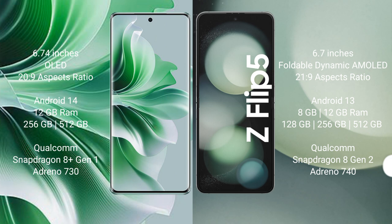Oppo Reno 11 Pro runs on the Android 14 operating system. Samsung Galaxy Z Flip 5 runs on the Android 13 operating system. Oppo Reno 11 Pro comes with 12GB RAM and 256GB or 512GB internal storage.